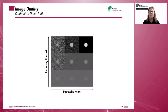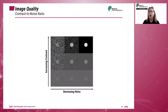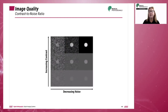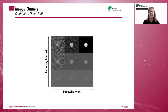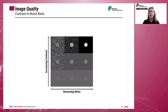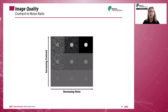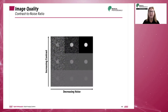Contrast to noise ratio, or CNR, is a method of describing the contrast resolution compared with the amount of noise in the image. Digital images with a higher contrast to noise ratio will increase the visibility of anatomical tissues.